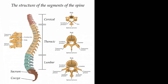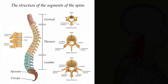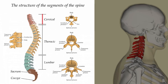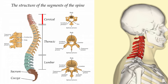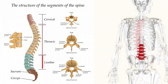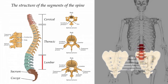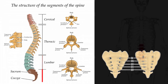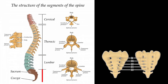These vertebrae are numbered. There are 7 in the neck, giving us C1 through C7. There are 12 in the thoracic spine, giving us T1 through T12. There are 5 in the lumbar spine, L1 to L5, and 5 in the sacral spine, though these become fused in adults and we mainly talk about S1.